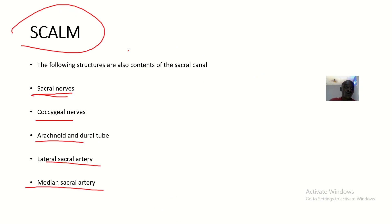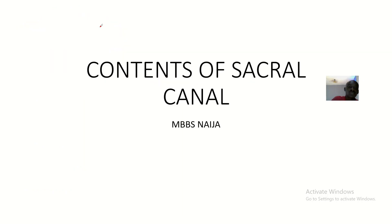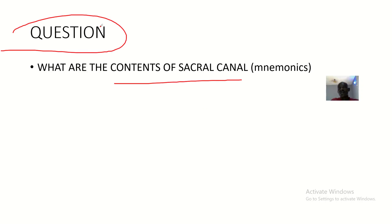Going over our mnemonic again: S stands for sacral nerves, C stands for coccygeal nerves, A stands for arachnoid and dural tube, L stands for lateral sacral artery, and M stands for median sacral artery. That's it about the contents of the sacral canal. I'll see you guys in the next one, bye for now.